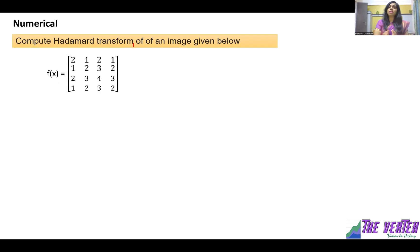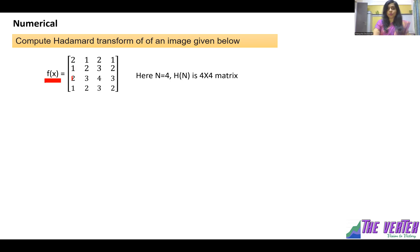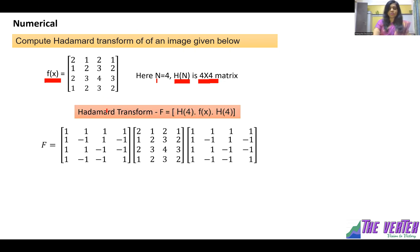Now let's calculate the Hadamard transform for an image. The numerical is: compute the Hadamard transform of the image given below. The image is denoted by small f(x), and these are the pixel intensity values. Since it is a 4x4 image, N equals 4 and our Hadamard matrix is H(4). For a 2D signal, the formula is: H(4) times image times H(4).